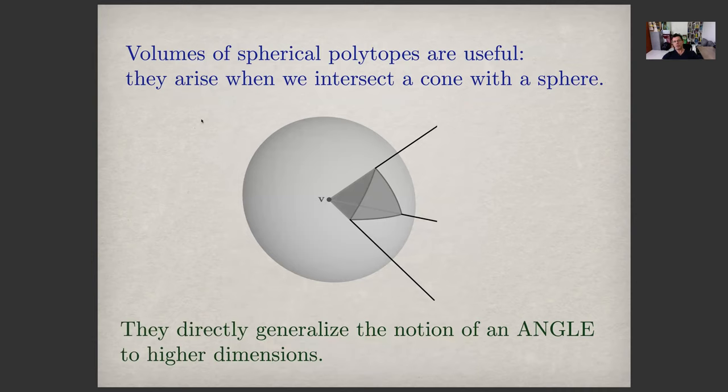And towards the end, we'll also study spherical polytopes, which by definition are the intersection of a sphere where you place a polyhedral cone whose apex is at the center of the sphere, and intersect it with the surface of the sphere. So for example, here we have this spherical geodesic triangle, and the area of this geodesic spherical triangle is by definition the solid angle. It generalizes in a very natural way the notion of an angle in two dimensions.